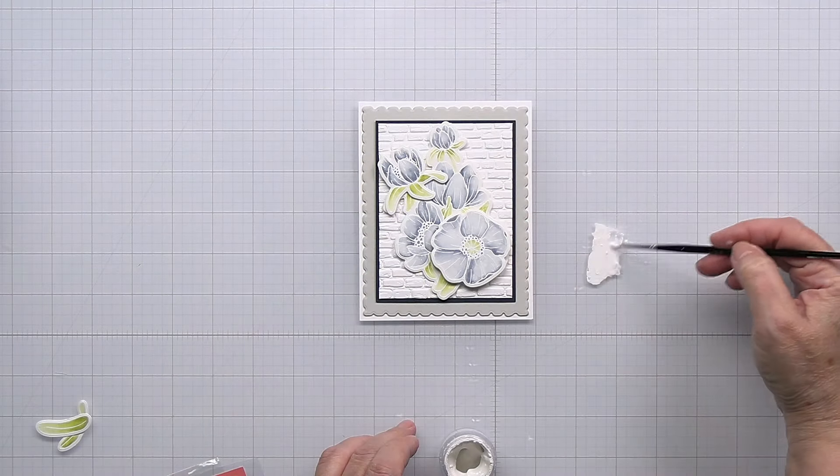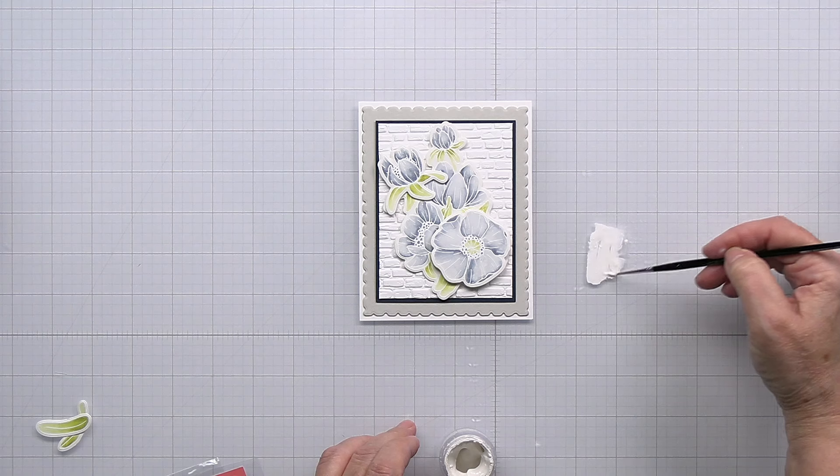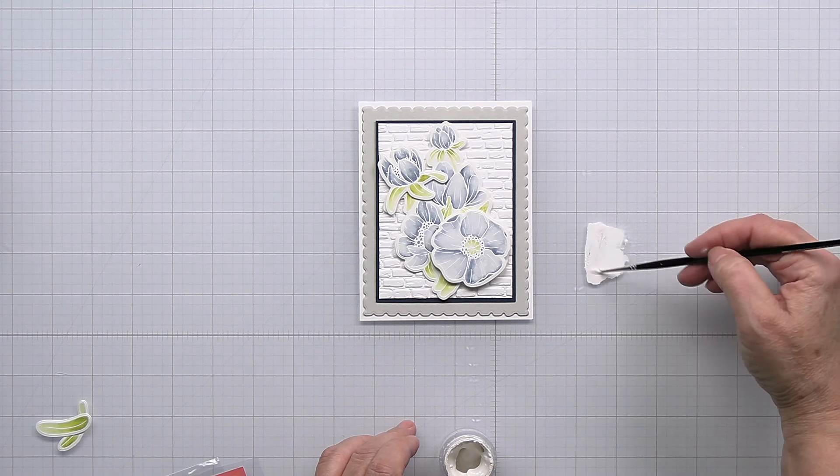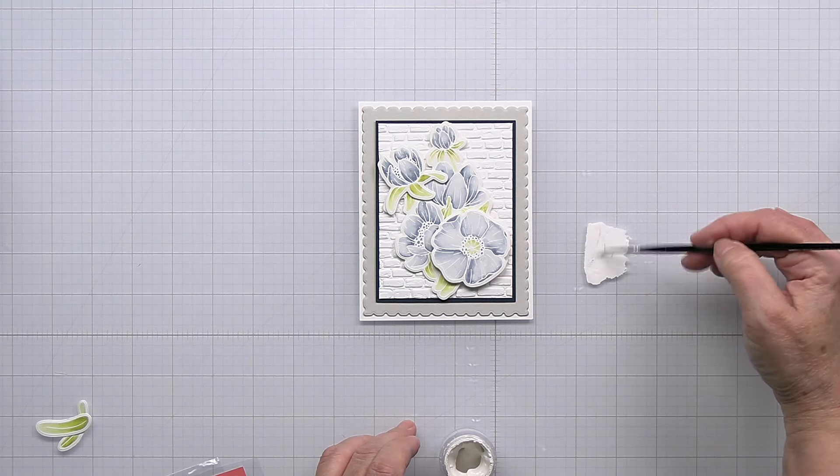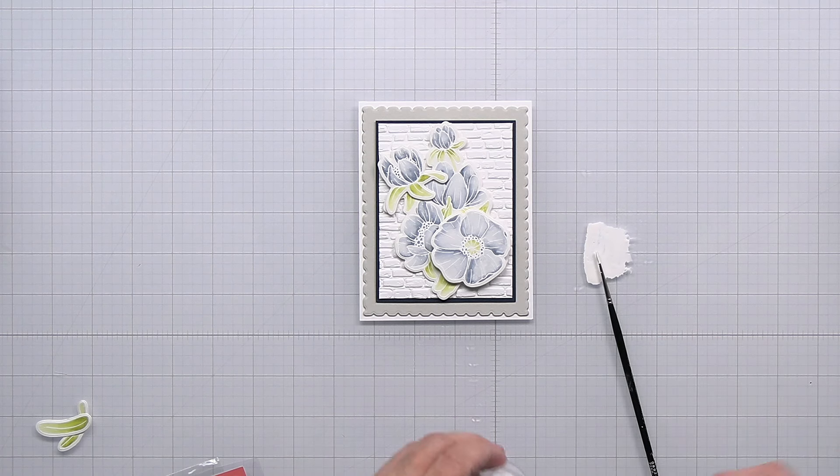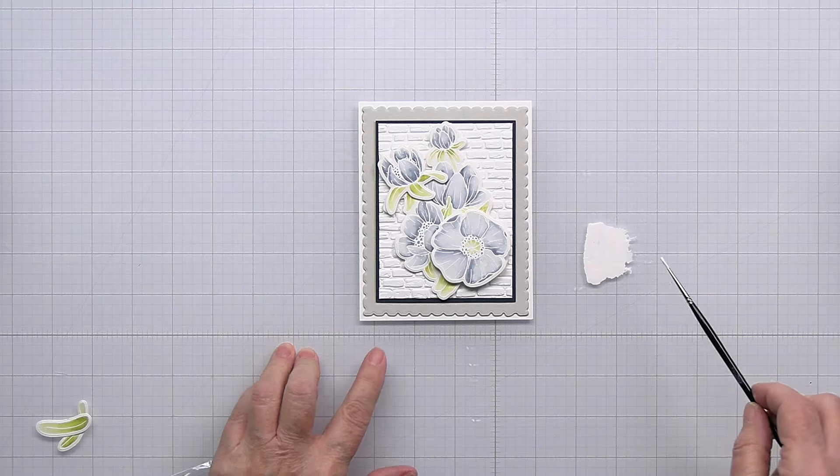Now I'm going to take a little bit of white splatter and splatter this over top of the entire front of the card just to give it that little bit of dimension. Once I'm finished that, all I have to do is stamp out and die cut my sentiment from the Sending Christmas Joy set and it will all be finished.